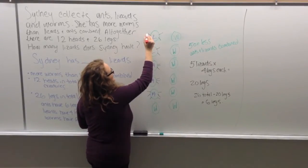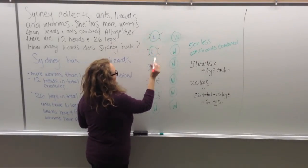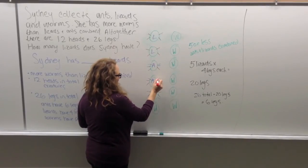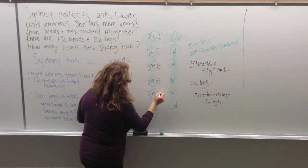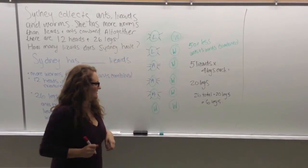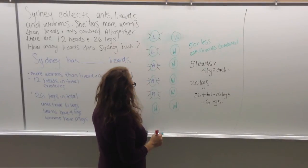And just to make sure that we have accounted for all the legs, let's add them all up. 1, 2, 3, 4, 5, 6, 7, 8, 9, 10, 11, 12, 13, 14, 15, 16, 17, 18, 19, 20, 21, 22, 23, 24, 25, and 26. Which is the amount that we were looking for.